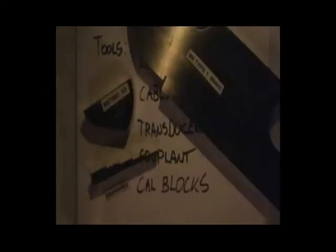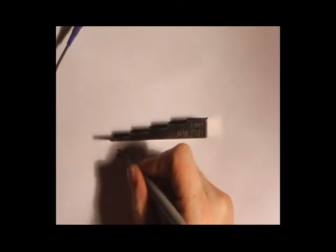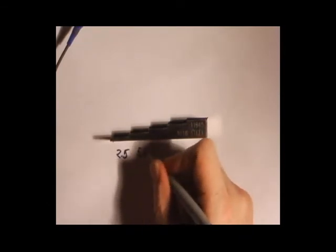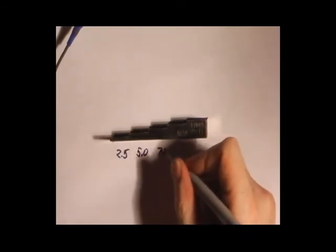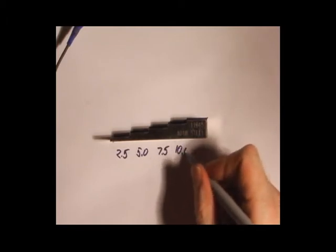And CalBlocks. We're going to start with the basics. Zero degree. Using a step wedge. Typical corrosion application. Thin materials.